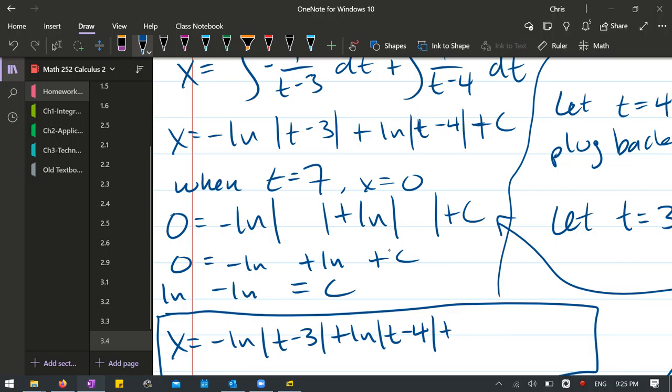t is seven, x is zero. So we have seven minus three, seven minus four. These are absolute values here. So if they happen to be negative, you're just going to take the positive. So we have ln four, ln three. We're going to subtract ln three to the other side and add ln four.